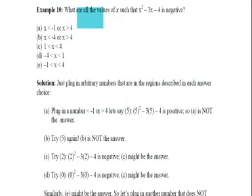The next example is, what are all the values of x such that x squared minus 3x minus 4 is negative? Let's look at the choices we have. x less than minus 1 or x greater than 4. x less than minus 4 or x greater than 1. 1 less than x less than 4. Minus 4 less than x less than 1. Minus 1 less than x less than 4.